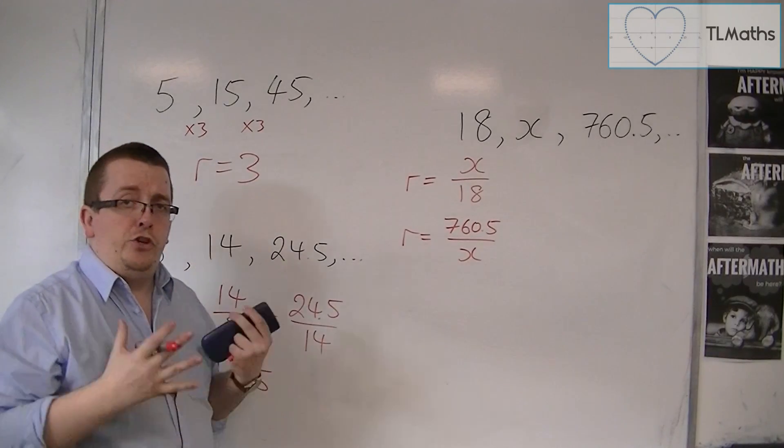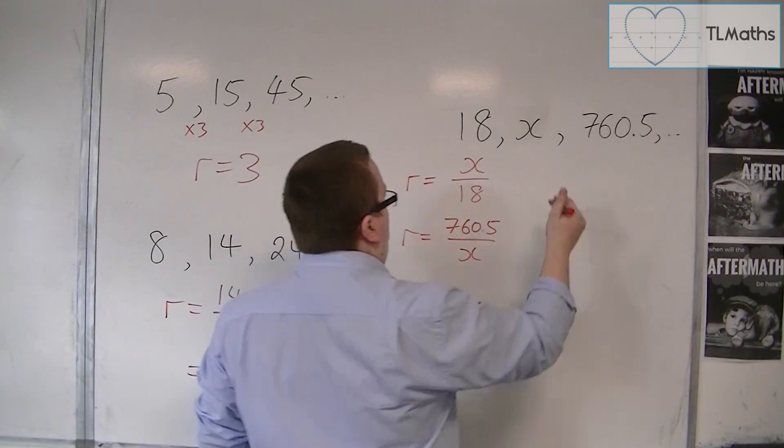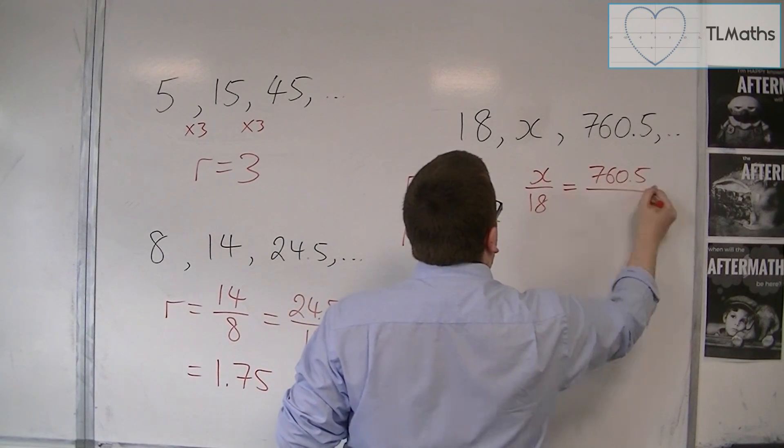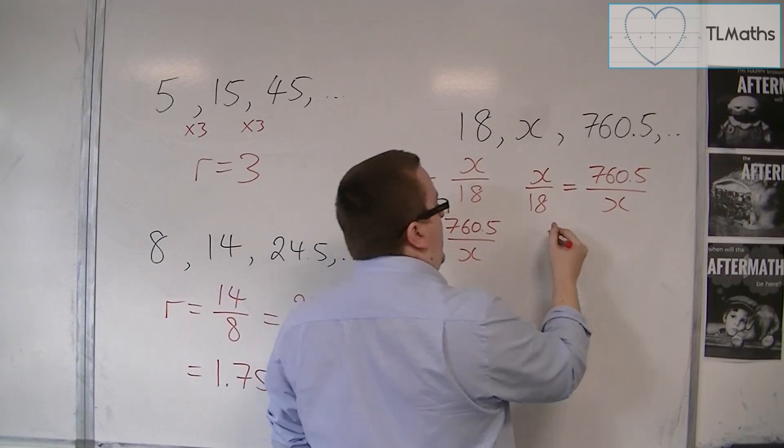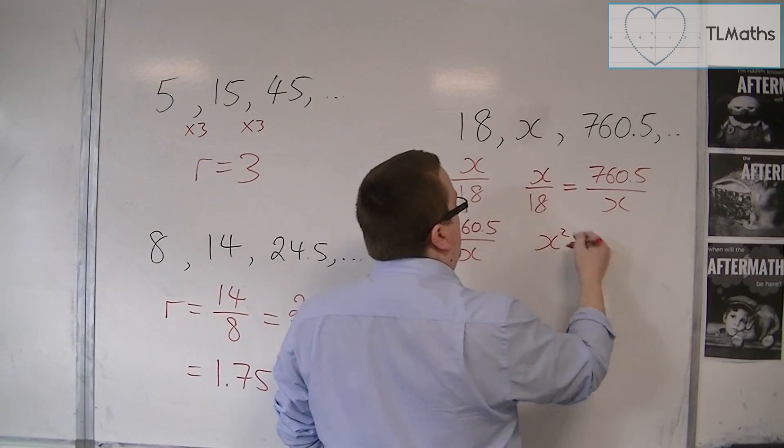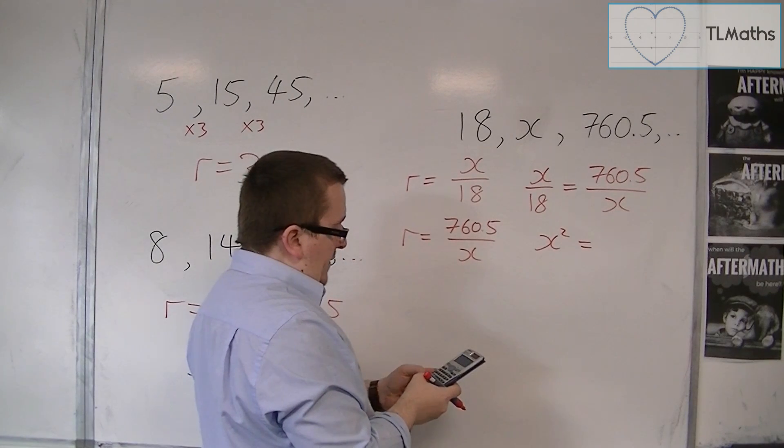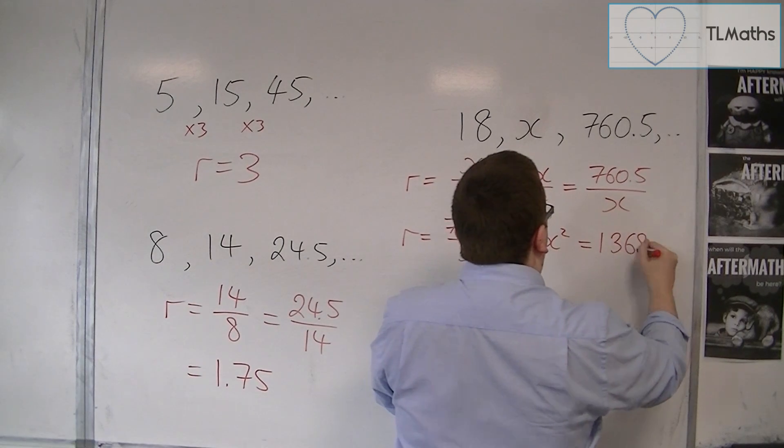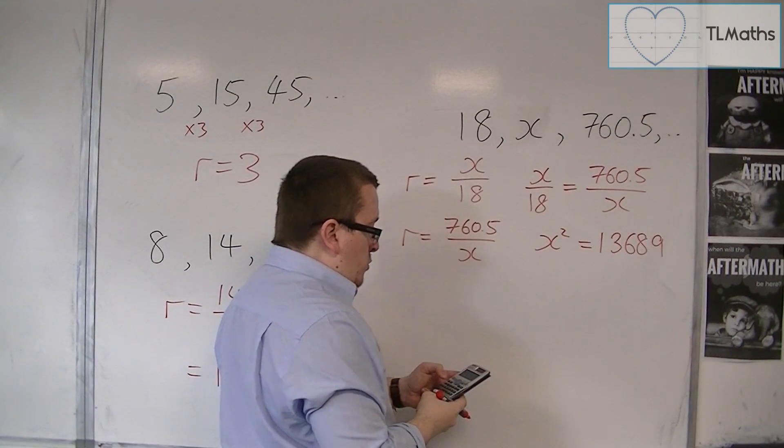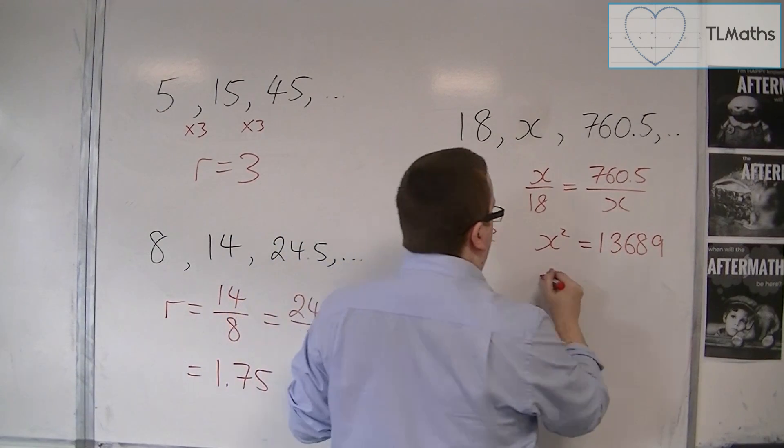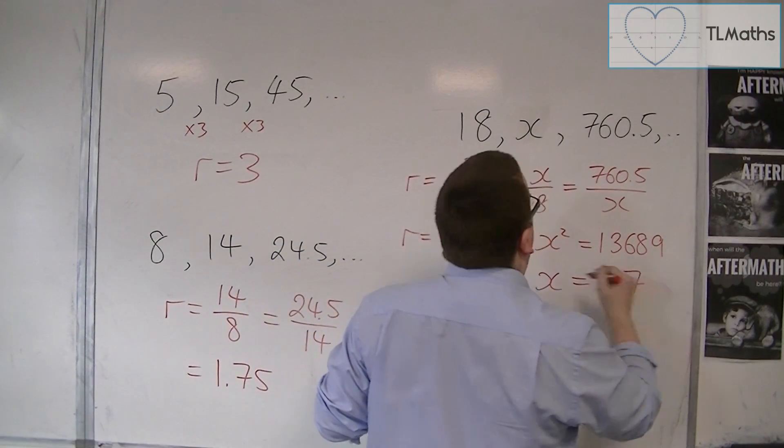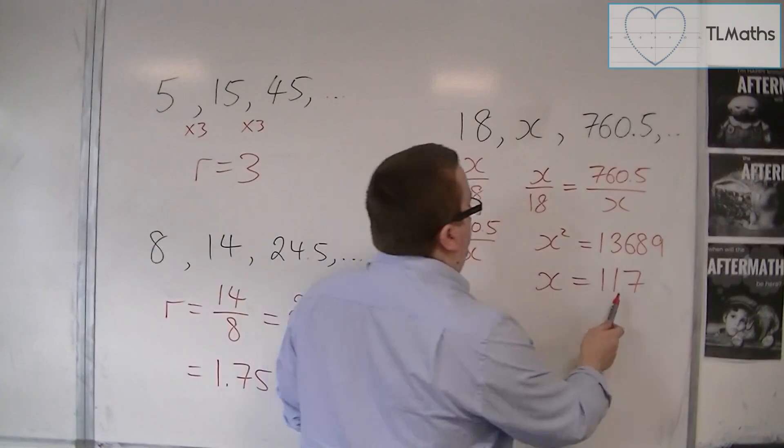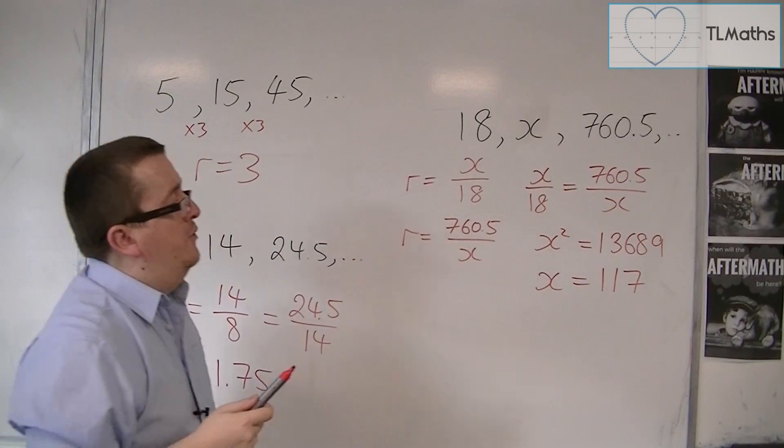Now, these r's should be exactly the same. So if I put one equal to the other, then I can multiply both sides by x to get x squared. Multiply both sides by 18. So 760.5 times 18 is 13689. And then I can square root that answer and I get 117. So that means that I found my value x, that middle value.